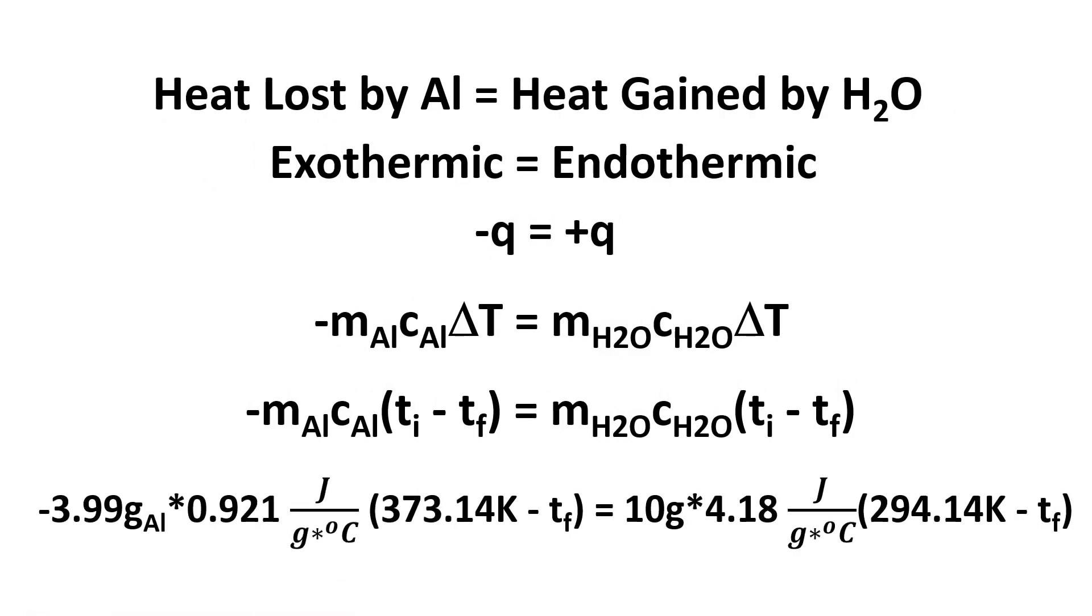Substituting the values, mass of aluminum is 3.99 grams, specific heat is 0.921, and the initial temperature is 373.14 Kelvin. Mass of water is 10 grams, specific heat is 4.18, and the initial temperature is 294.14 Kelvin.